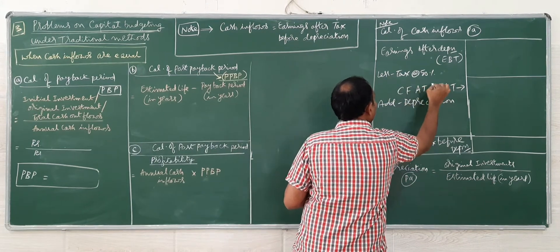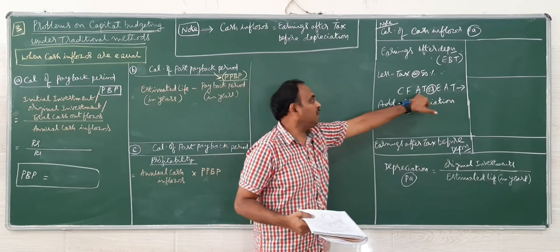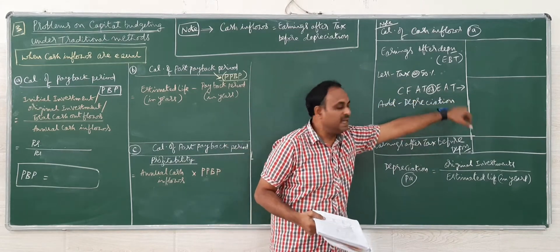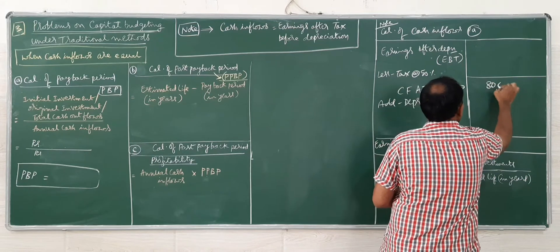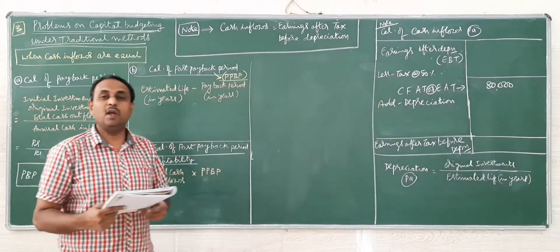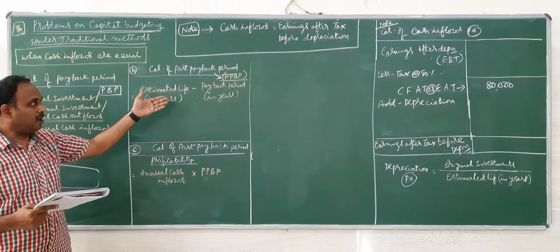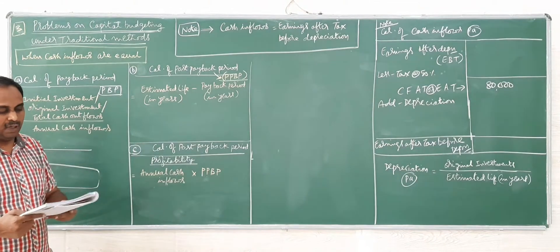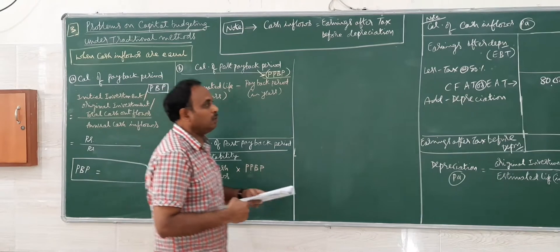CFAT, cash flow after tax, we can also call it as EAT, Rs.80,000 for a period of 15 years. We need to find the payback period, post-payback period, and the profitability. So let us go one by one.